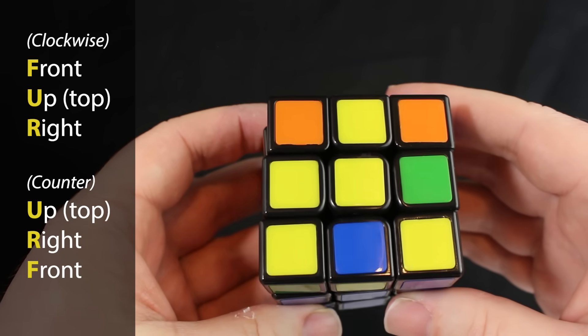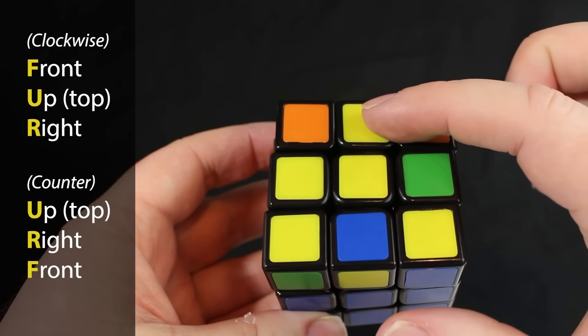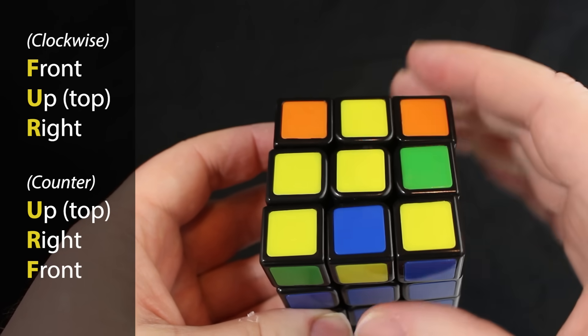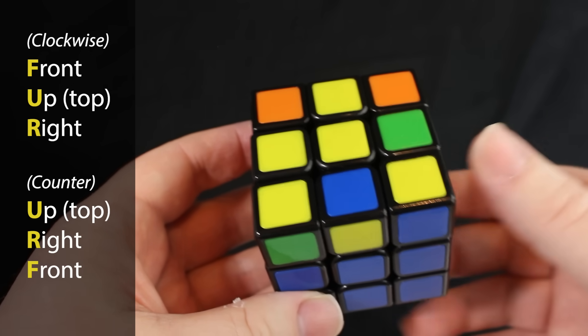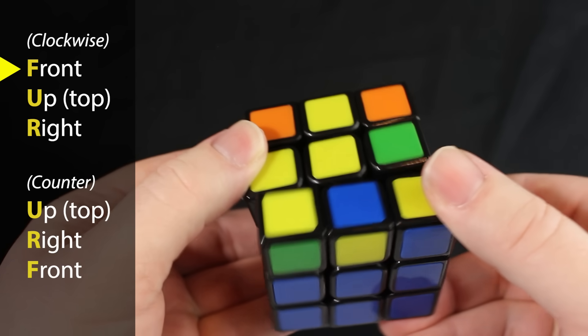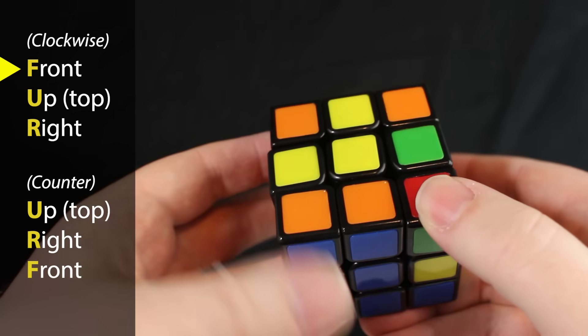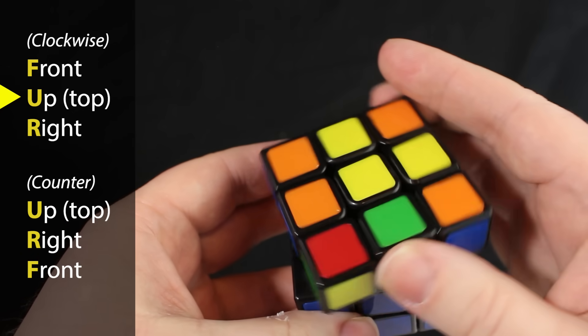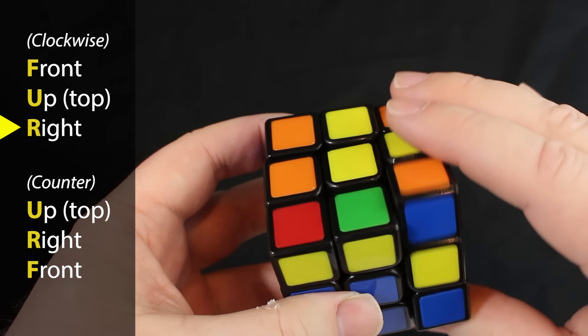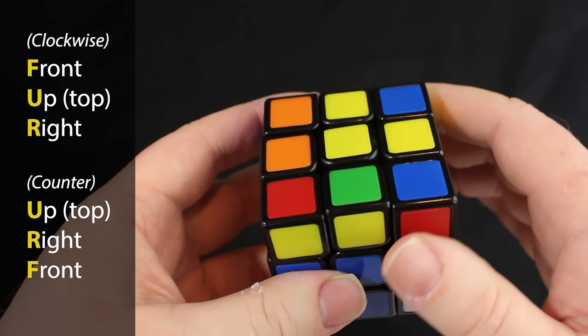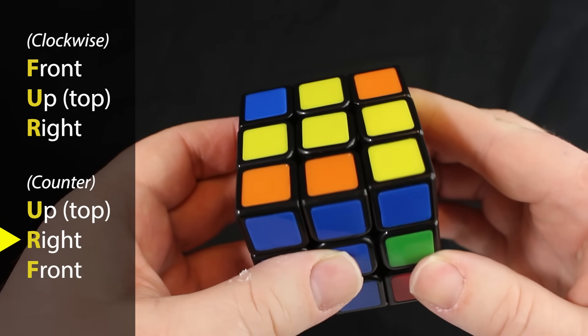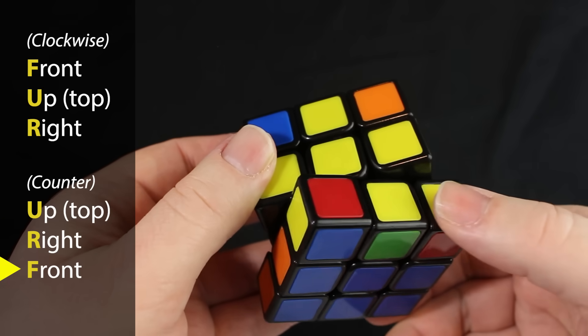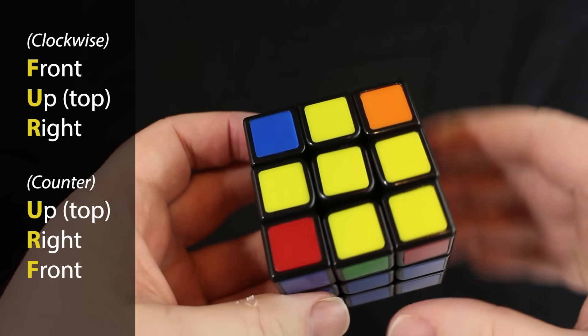Now notice it did not make the yellow plus, and that's totally fine. But it did make the boomerang, and it's already oriented to the top left. So we don't have to move it around. It's already there. So we just do the moves again. Once again, clockwise moves to the front, and the top, and the right. And the counterclockwise moves: the top, the right, and then the front here. So now we did make the yellow plus.